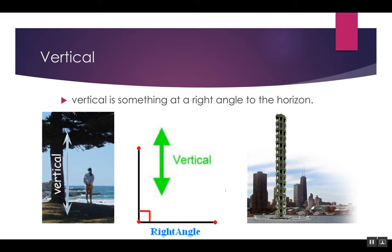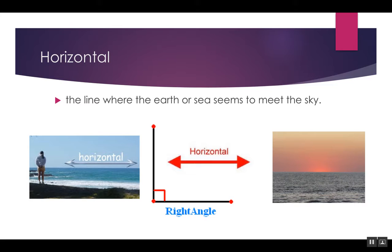Vertical is something at a right angle to the horizon — it means it goes up and down. When we talk about vertical, you will be drawing a line that goes from top to bottom or bottom to top. Horizontal: the best way to remember it is that it goes the same direction as the horizon, from left to right.